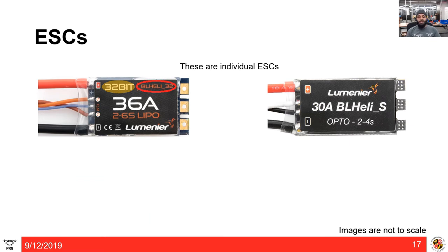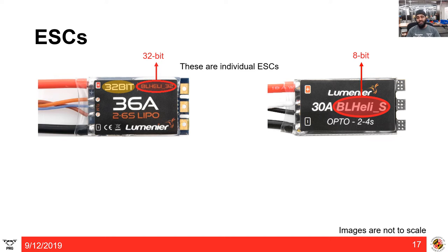ESCs play a very important role in quadrotor performance. Most modern ESCs are controlled by a 32-bit processor running firmware called BLHeli_32. A few years back, a weaker 8-bit processor with BLHeli_S firmware was common. The 32-bit ESCs can communicate with faster digital protocols like DShot 1200 rather than DShot 600. They can also perform advanced tasks like controlling LEDs and changing motor rotation direction for features like turtle mode.